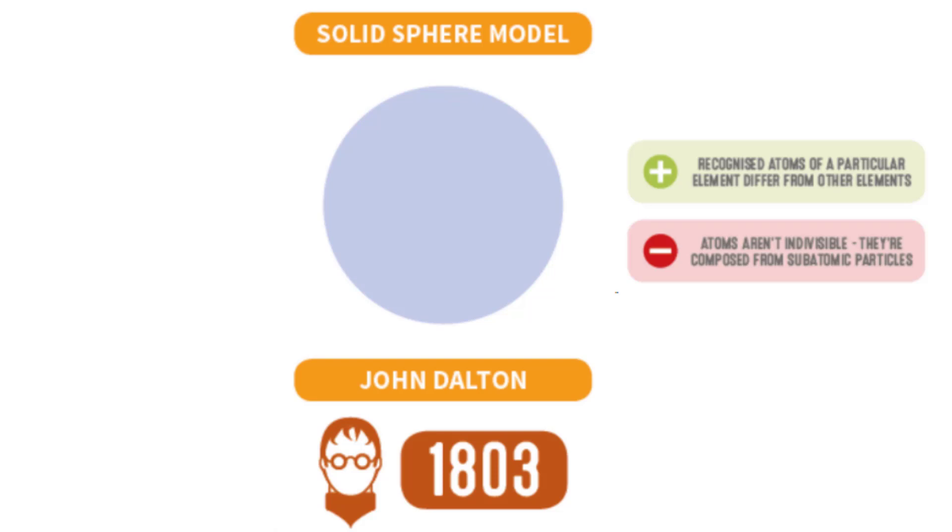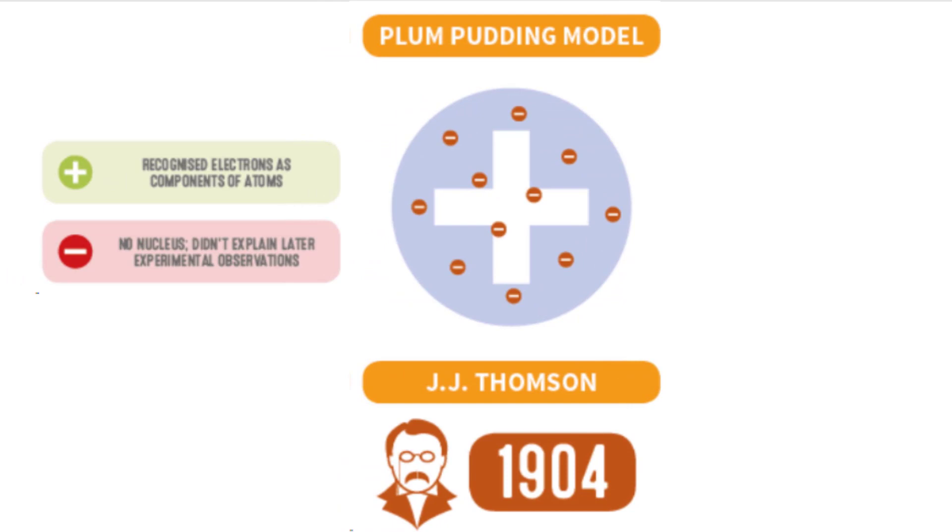And he didn't know, one of the big disadvantages to his model was, he didn't know anything was inside of it. No subatomic particles, and obviously he didn't know anything about what we're going to learn of isotopes or ions, that there were different types of each one of those elements.